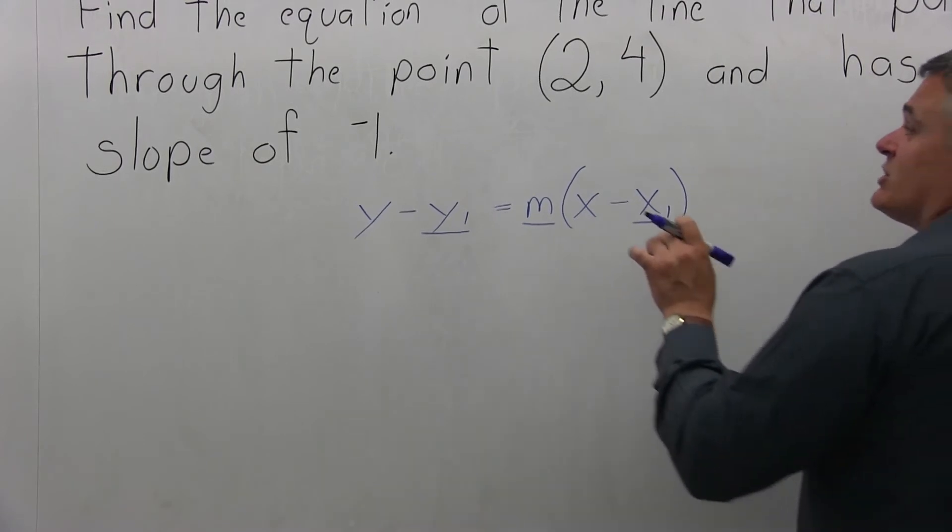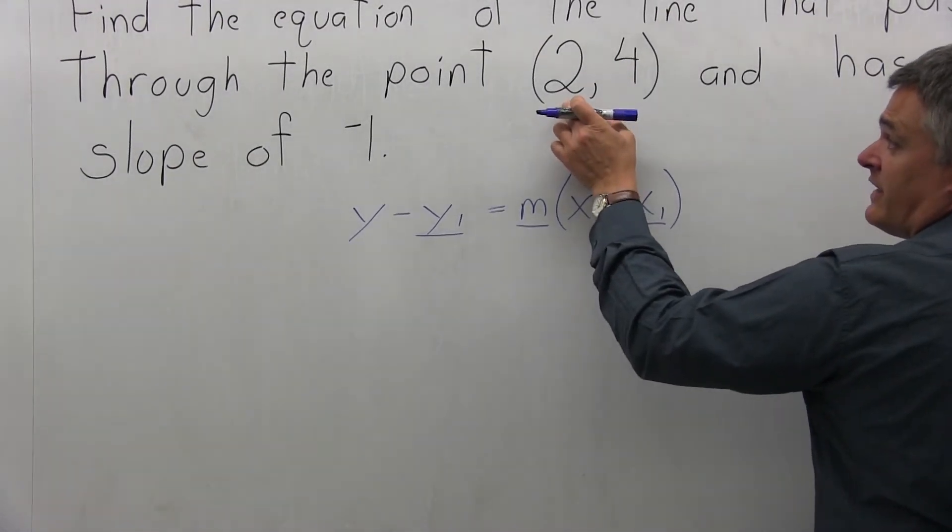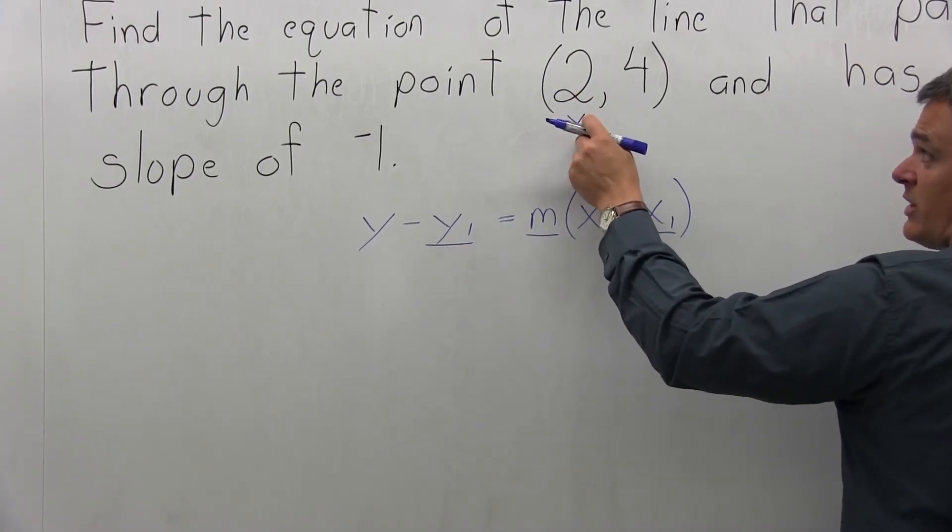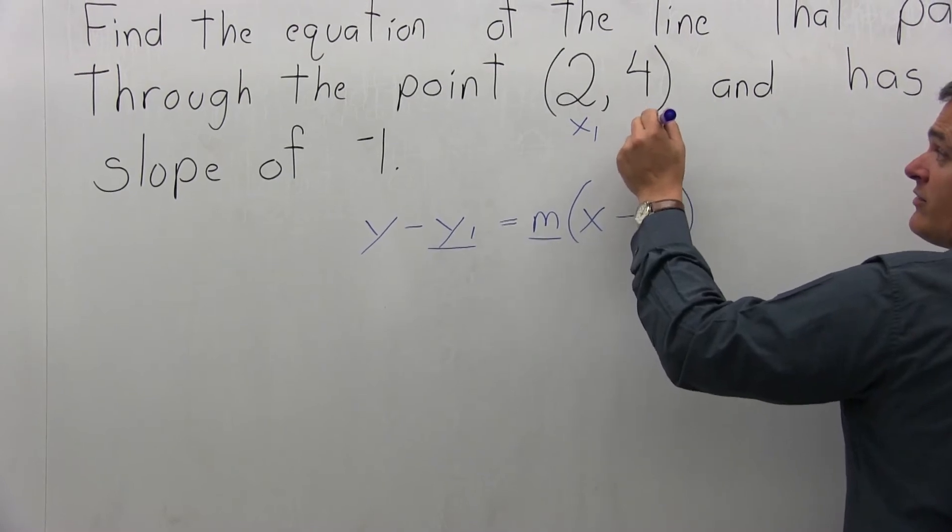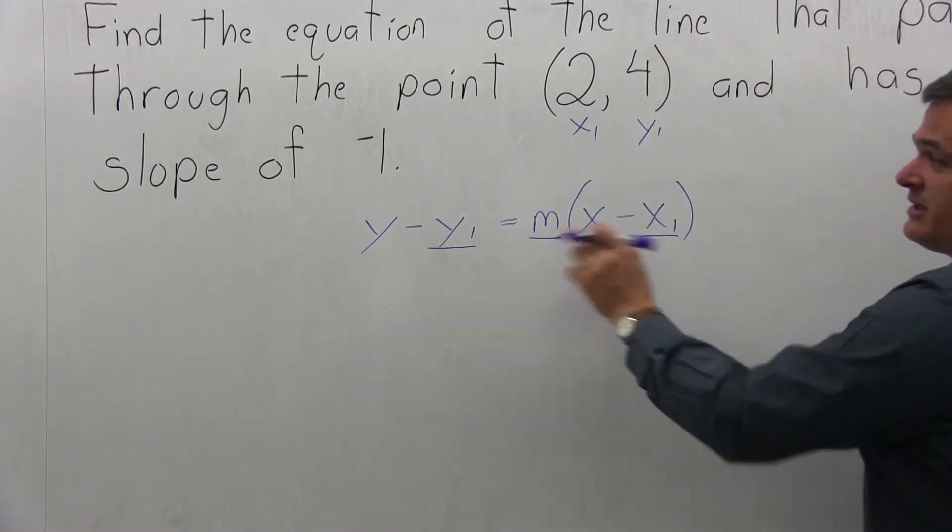So from the given information, we have a point that's on the line (2,4). The x-coordinate of that point we can label x1, so the 2 in (2,4) is x1. And the 4 of (2,4) will be y1. It's the y-coordinate, and those will get plugged in here in the formula.